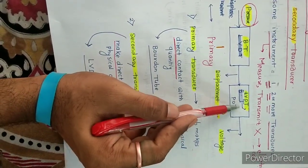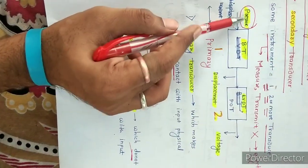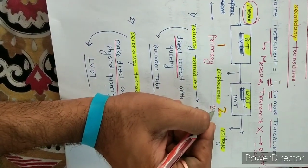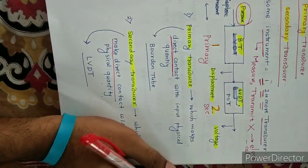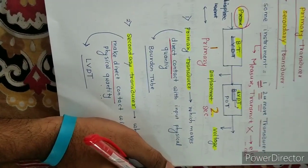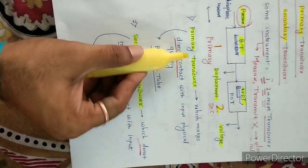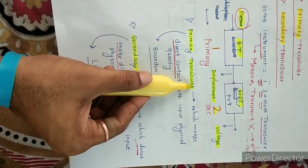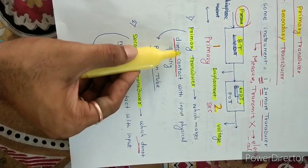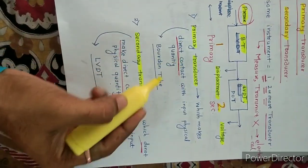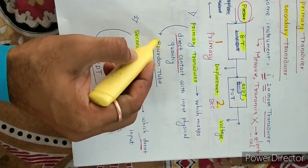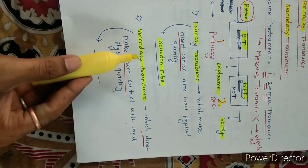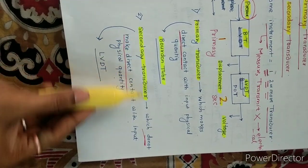The Bourdon tube is the primary transducer because it makes direct contact with the input signal. The LVDT does not make direct contact with the input, so it is called the secondary transducer.